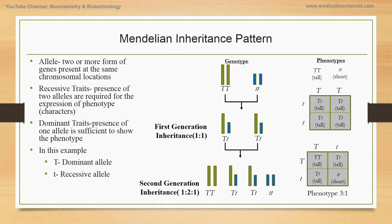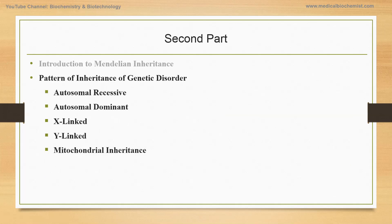This is all true for one gene, one protein. But there are various genes and genetic disorders where this rule does not apply. Overall, today we discussed Mendelian inheritance and how it works. In the next lecture, we will be discussing the pattern of inheritance of genetic disorders. Stay tuned. Thank you.